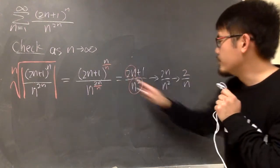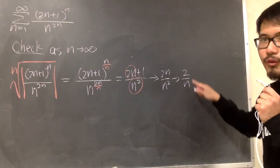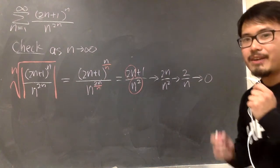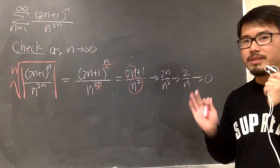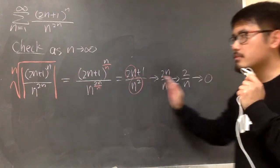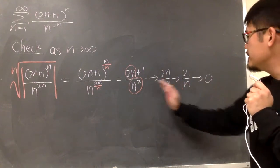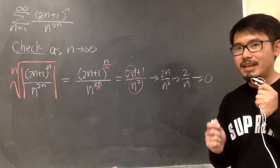And as n goes to infinity, we have 2 over infinity, so we can say this is approaching to 0. Alright, now, we have to remember what can we say after we get the limit right here when we are doing the root test. This is the limit that we have, which is 0.